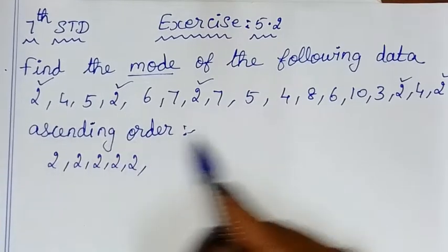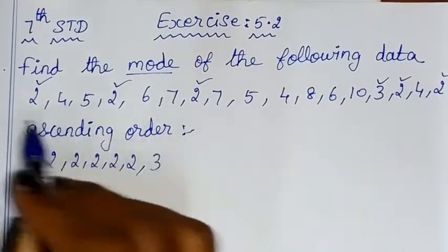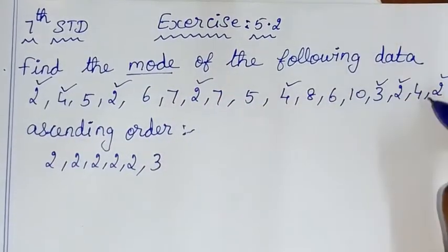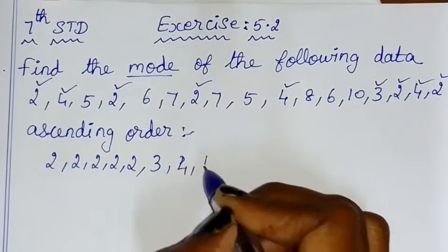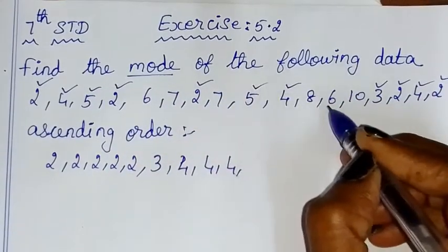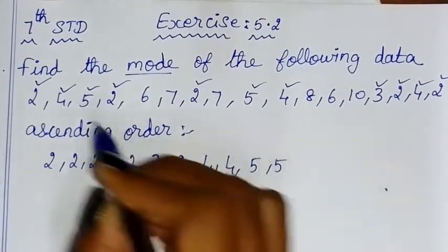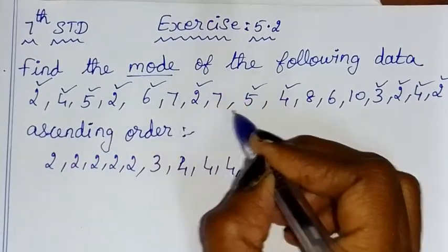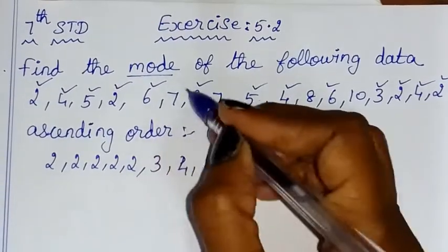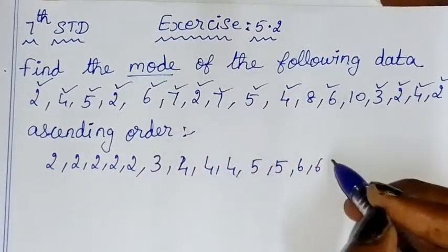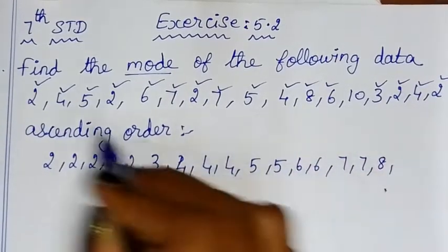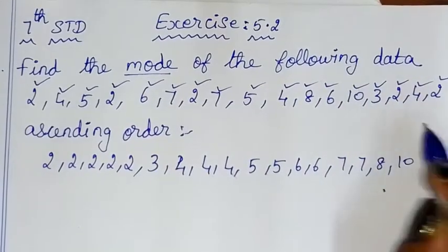If it's 3, it does not repeat the same. If it's 4, it repeats 3 times. 5 repeats 2 times. 6 repeats 2 times. 7 repeats 2 times. 8 repeats 1 time. 9 and 10 each repeat 1 time.